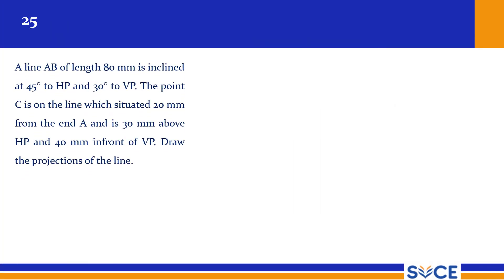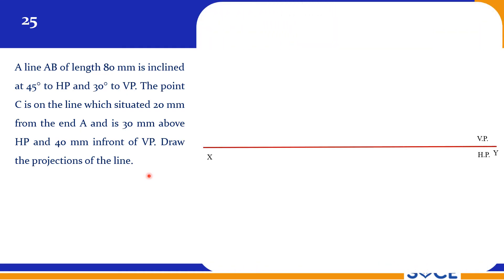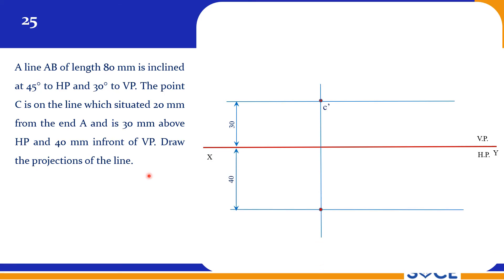A line AB of length 80 mm is inclined at 45 degrees to HP and 30 degrees to VP. Point C is on the line, situated 20 mm from end A, and is 30 mm above HP and 40 mm in front of VP. Draw the projections of the line. This is a very similar kind of problem. Point C is similar to the midpoint, except it is not exactly at the middle — it is 20 mm from point A, so mark C dash and C accordingly.